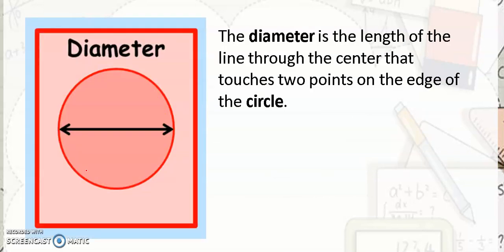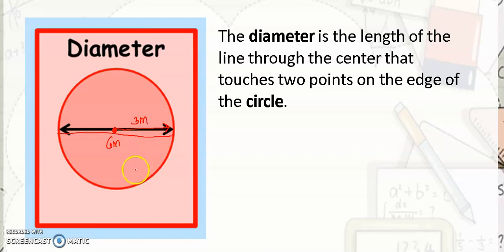Next would be the diameter. The diameter is the length of the line through the center that touches two points on the edge of the circle. Take note: your diameter should pass through the center of the circle. The diameter would be twice the radius — so if the radius is 3 meters, your diameter would be 6 meters. Diameter is always twice the radius and it must pass through the center of your circle.